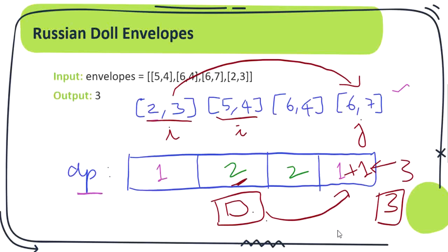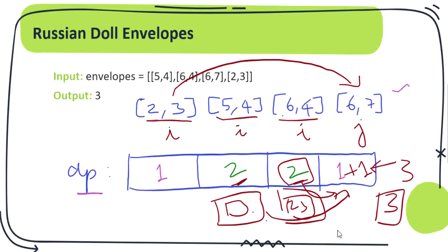Moving pointer i to 6,4: at that stage there are already 2 envelopes. We check whether we can put all of 2,3 and 6,4 into 6,7 — no, because 6 shares the same height. So the maximum number of dolls we have made is 3. That is going to be our answer. This algorithm works in O(n²) time because we sort the array once and then iterate through it with two pointers i and j.